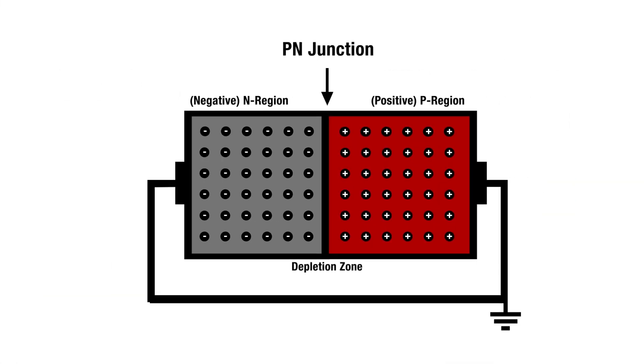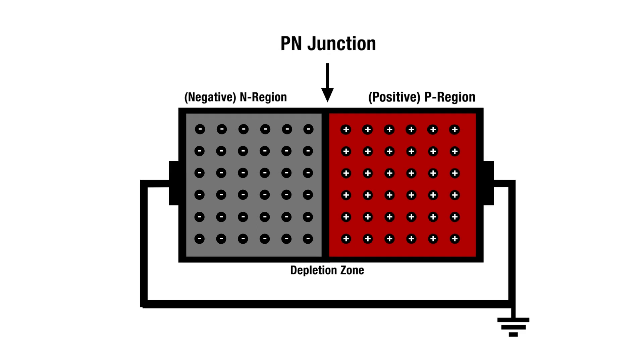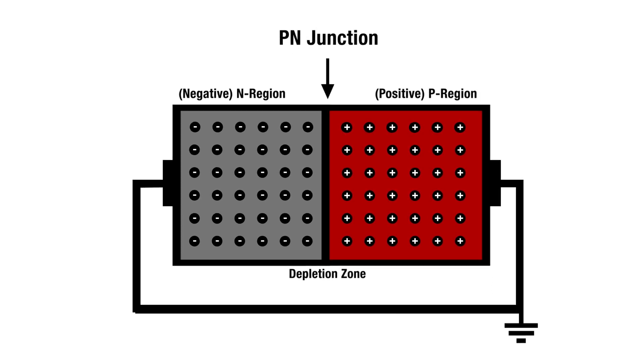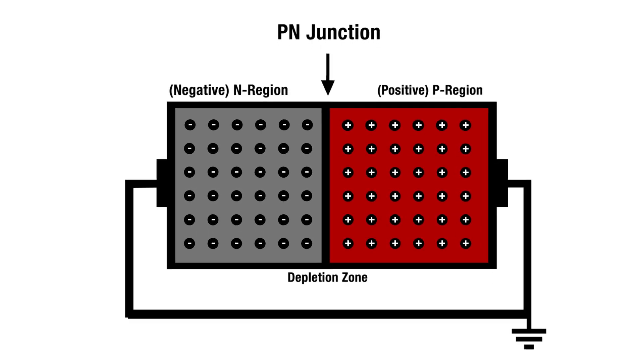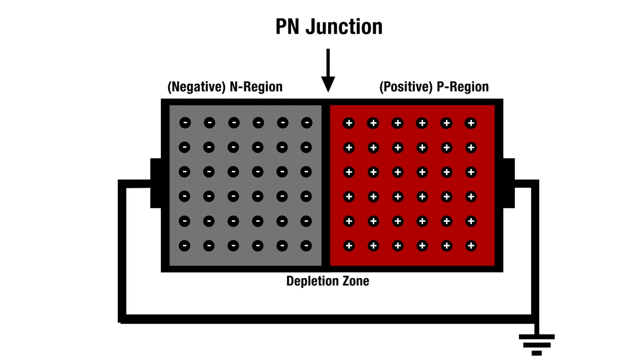So we have these two regions in the diode. One doped with positive charge carriers, and one doped with negative charge carriers. Where these two regions meet is referred to as the junction.